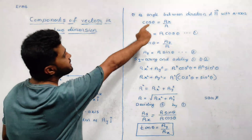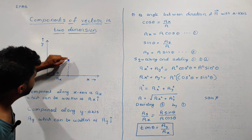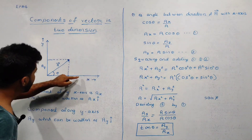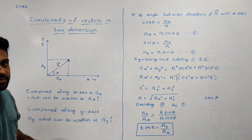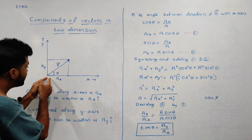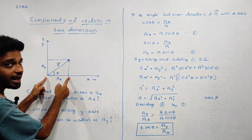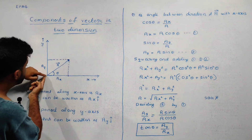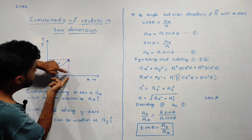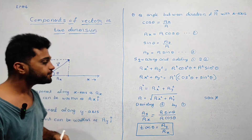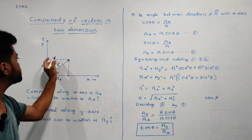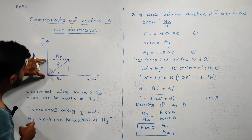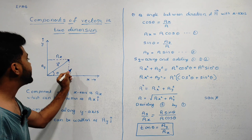This is the angle with the x-axis. If you have a triangle, you will get the components. The component Ay and the magnitude A give you the relation for Y, and Ax gives you the relation for X.